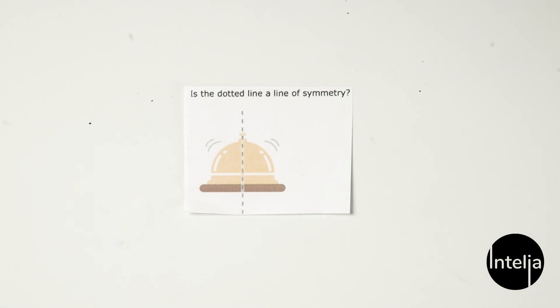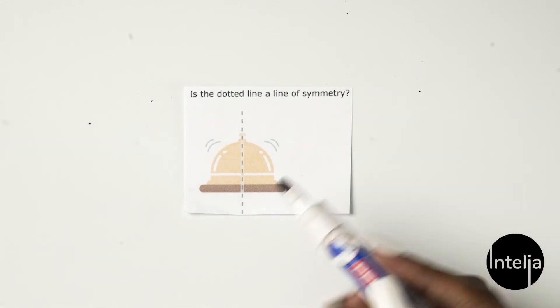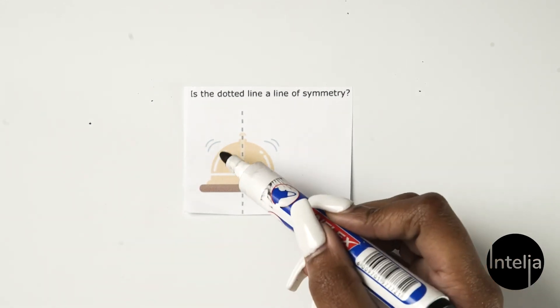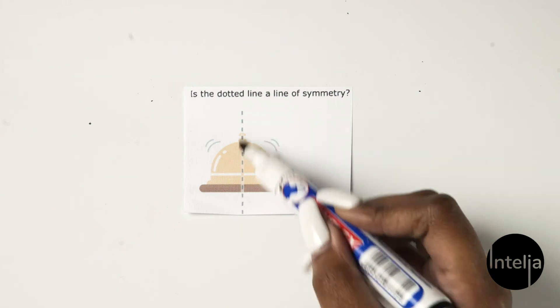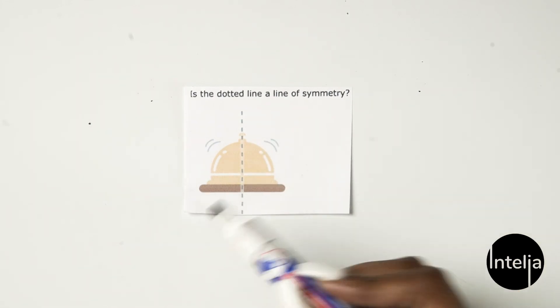Now for the final one — is this a line of symmetry? Yes, it is. Because everything you see on the left, you see on the right. It's cut into exactly half, so you can see that was a line of symmetry.